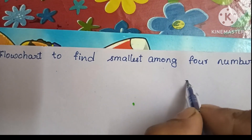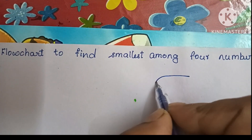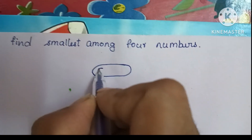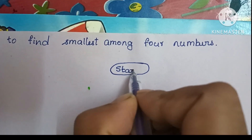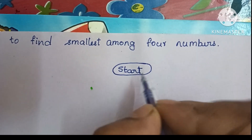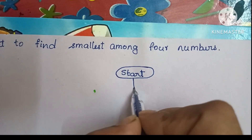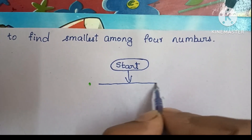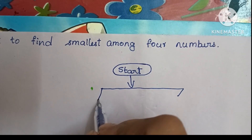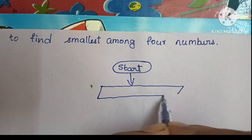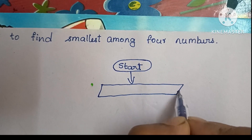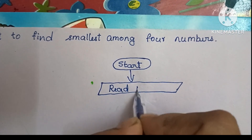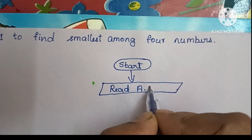A flowchart always starts with a start statement, which is written within an oval shape. Next, we have to read input values. Input values are always written within a parallelogram shape. Within that, we have to read four variable names: A, B, C, and D.